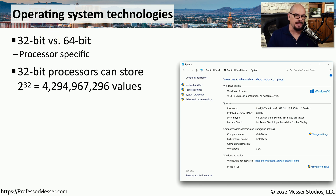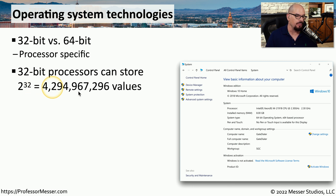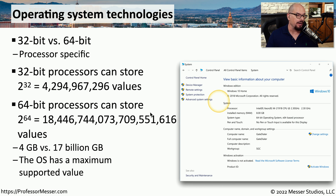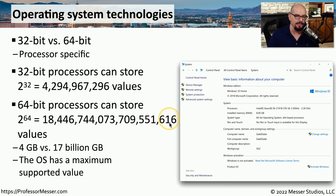A 32-bit processor can access up to 2 to the 32nd power of information — that is just over 4 billion values that can be accessed in that operating system. If you have a 64-bit architecture, that goes up dramatically to 2 to the 64th power, which is an extremely large amount of data.